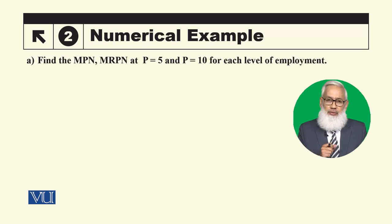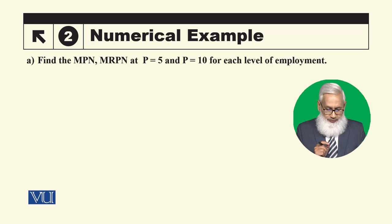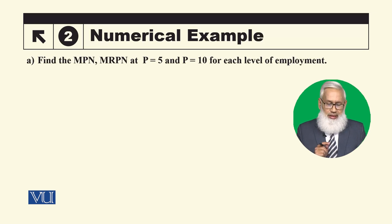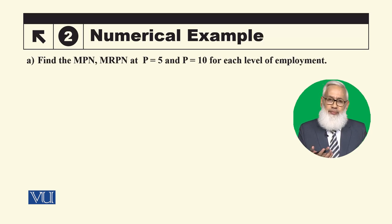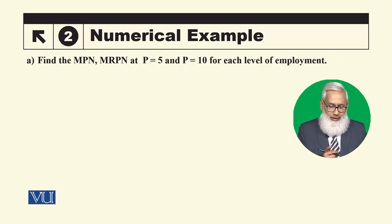When nominal wage equals a certain level, the firm will determine its labor demand. So here we will talk about the marginal product of labor and the marginal revenue product of labor — that is, when you multiply the marginal product of labor by the price of output, you get the nominal value of the marginal product, which we are calling MRPN.